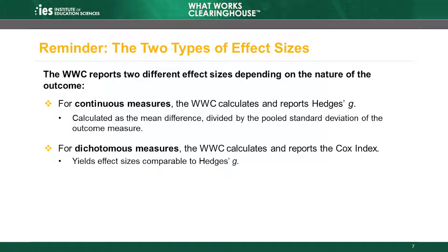The formulas require the mean and standard deviation of the outcome measure along with sample sizes separately for the intervention and comparison groups. The WWC's Study Review Guide has tools to assist with these calculations and all calculations described in this module. The Study Review Guide is discussed in detail in Module 9.